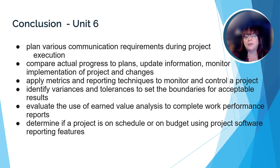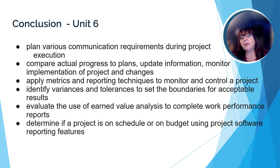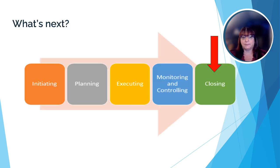In this unit, we looked closely at the monitoring and controlling phase of the project life cycle, which happens simultaneously with the execution phase. We learned how a project manager uses the plans created in the planning phase to compare to what's actually happening in the project, thereby keeping track of anything that may keep the project from completing successfully. By using a variety of tools and metrics, the project manager can compare planned versus actual and intercede when things look like they may interfere with completion. In Unit 7, we're going to look more closely at the closing phase of the project life cycle.